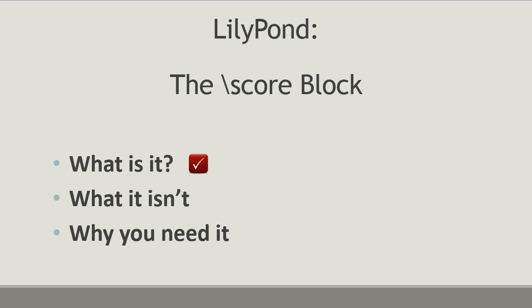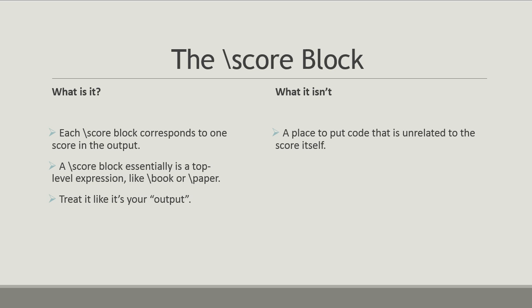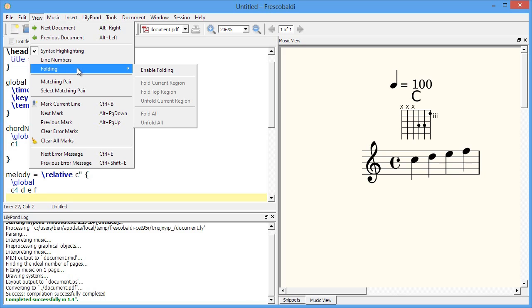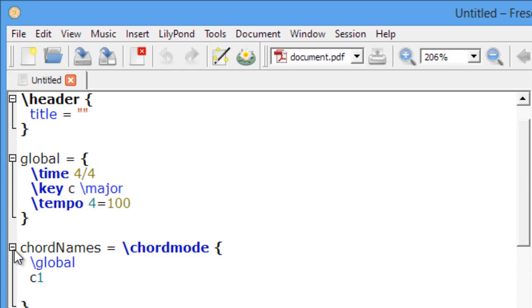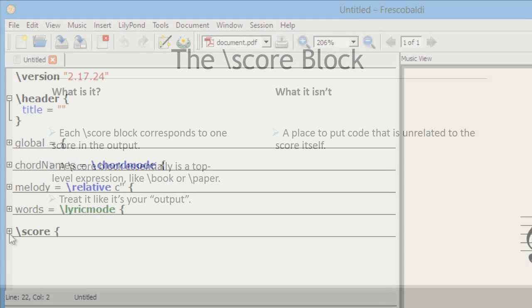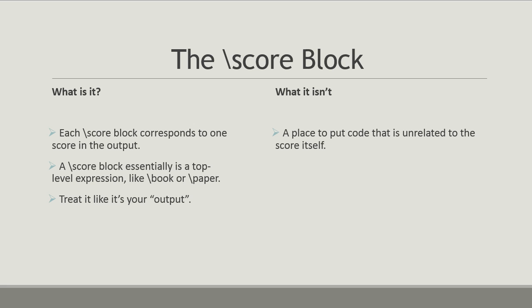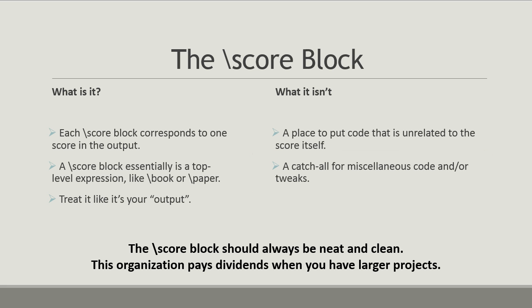What the score block is not: the score block is not a place to store any old code that you don't really have a place for, or code you dumped in because you didn't feel like scrolling to the top of your input file. This is not a good practice. If your input file gets so long it feels out of control, consider enabling the folding option in Frescobaldi, which collapses your code and makes life much easier. Keep the score block as neat and clean as possible without any extra code. It really shouldn't be a catch-all for miscellaneous code or tweaks. In later videos, I'll show you how to keep your adjustments in a separate file altogether.